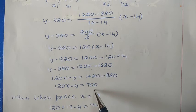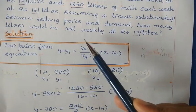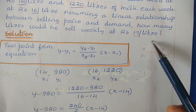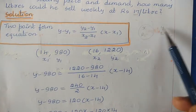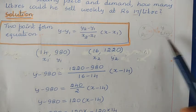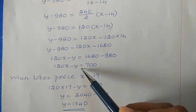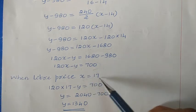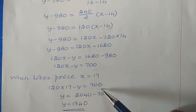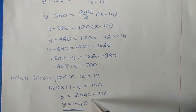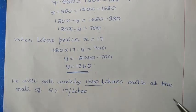Expanding: y minus 980 = 120x minus 1680, which gives 120x minus y = 700. This is the equation of the line. To find liters sold at rupees 17 per liter, substitute x = 17: 120 into 17 minus y = 700, so 2040 minus y = 700, therefore y = 1340. He will sell 1340 liters of milk weekly at the rate of rupees 17 per liter.